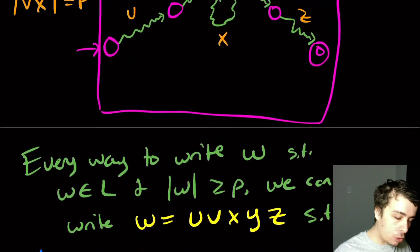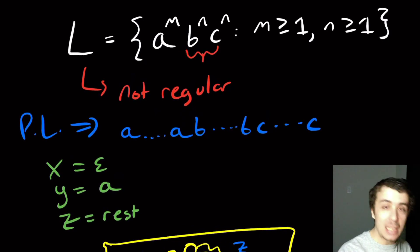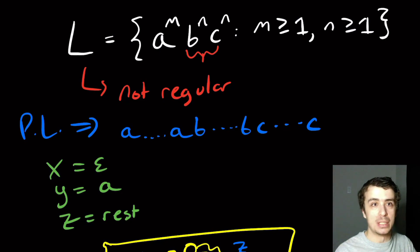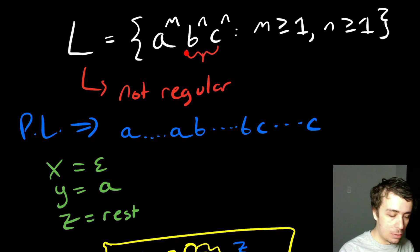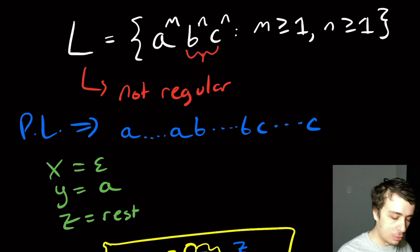Now the general version can be used to prove that this original language is not regular because it says that every way, every possible way to break this string up into those five pieces, can be pumped within the language. Well, the first one doesn't allow us to pump out of the language, so it's okay. But if we pump over here, we can find that one decomposition where the v and the x part are in this set of b's right here. And then we can pump out of the language just like we would with zero to the n, one to the n. And so that allows us to show that this language is not regular.